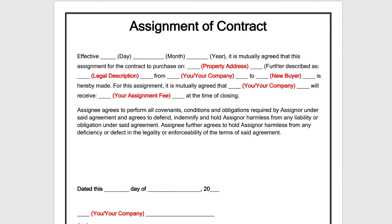From you or your company name — when I got started, I didn't have a company name, so I just put my name in here. But if you do have a business set up, you would want to put that here. To your new buyer — so whoever your new buyer is or the company is, it is mutually agreed that you or your company will receive a dollar amount. This is going to be your assignment fee, so $5,000 or $10,000, at the time of closing.